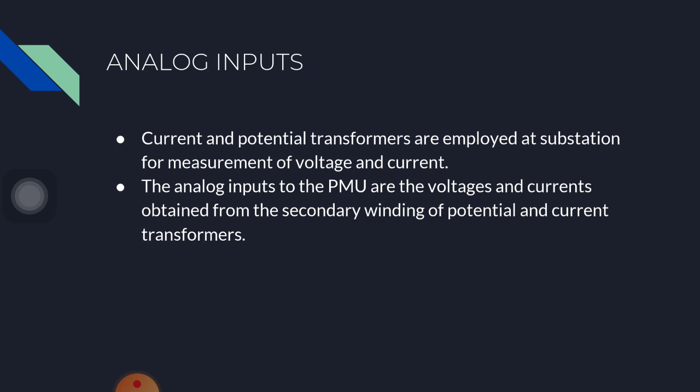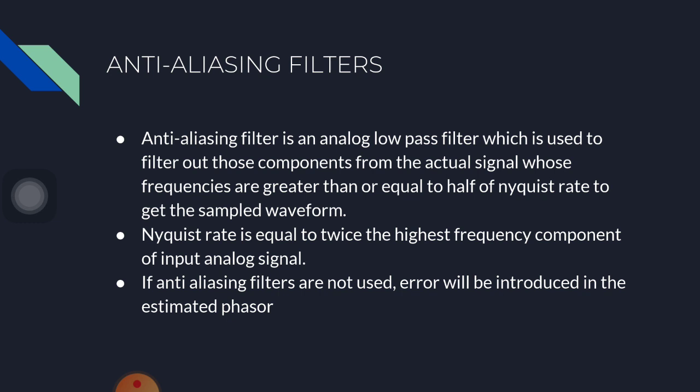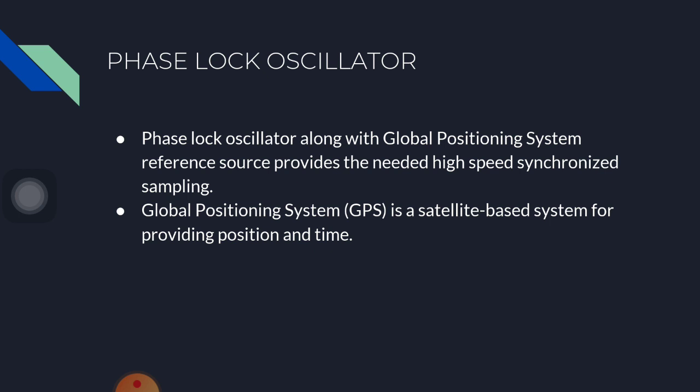Analog inputs: current and potential transformers are employed at substations for measurements of voltage and current. The analog inputs to the PMU are the voltage and current obtained from the secondary winding of potential and current transformers. Anti-aliasing filter: an anti-aliasing filter is an analog low-pass filter used to filter out components from the actual signal whose frequencies are greater than or equal to half of the Nyquist rate of the sampled waveform. The Nyquist rate is equal to twice the highest frequency component of the input analog signal. If anti-aliasing filters are not used, errors will be introduced in the estimated phasor.